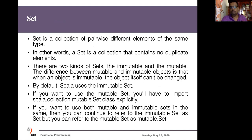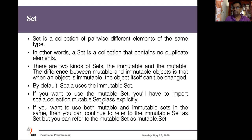Another important collection type available in Scala is Set. A Set collection can store a group of elements together. The difference between List and Set is that a list can contain duplicate elements, but a Set cannot — it only stores unique elements. Like lists, sets are also immutable by default. But there are ways to create mutable sets if you want.